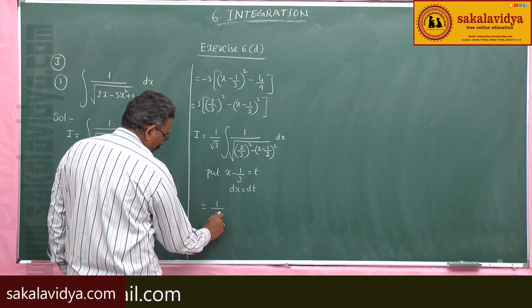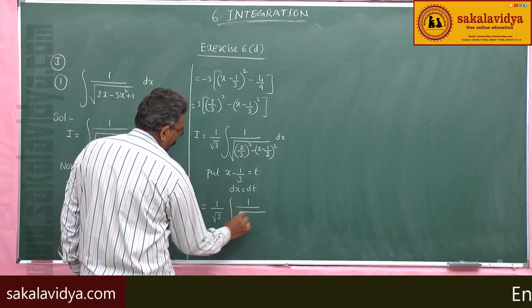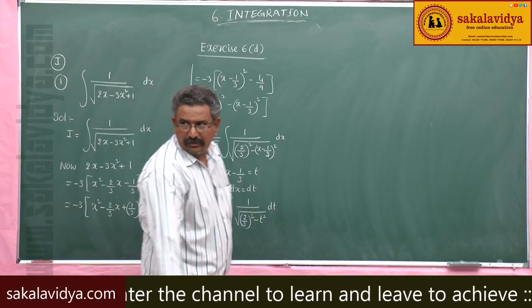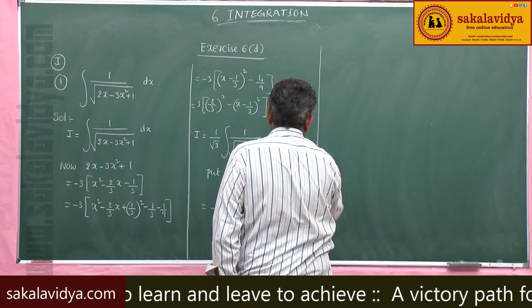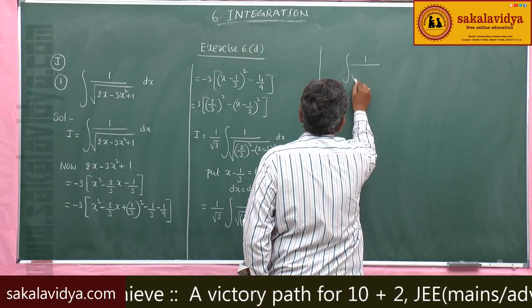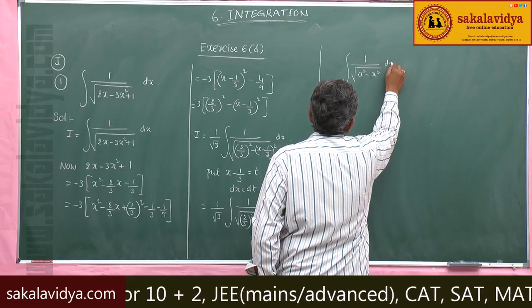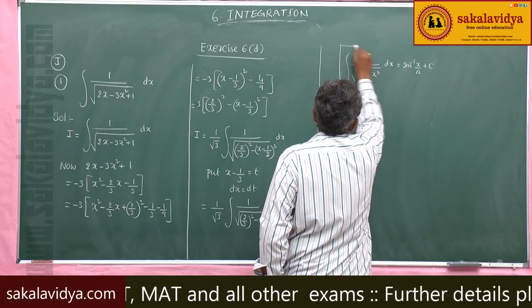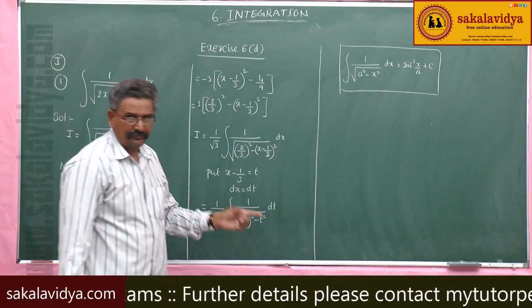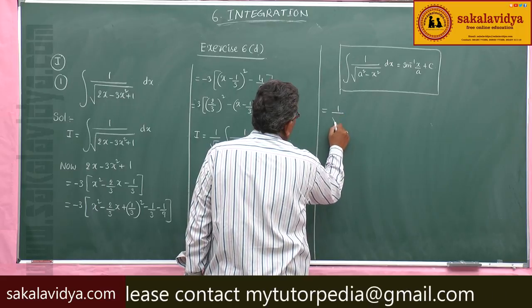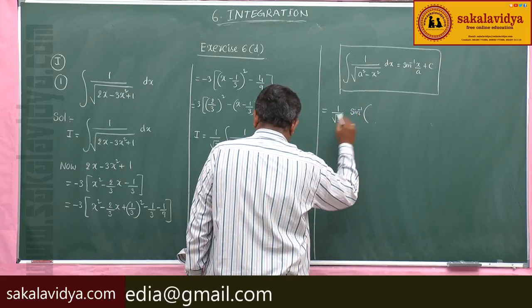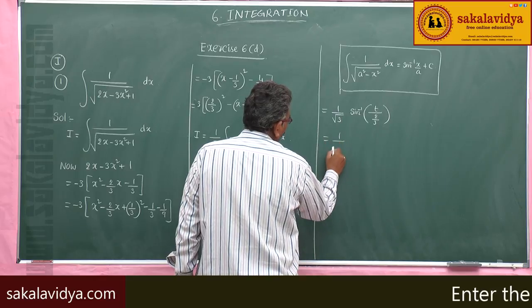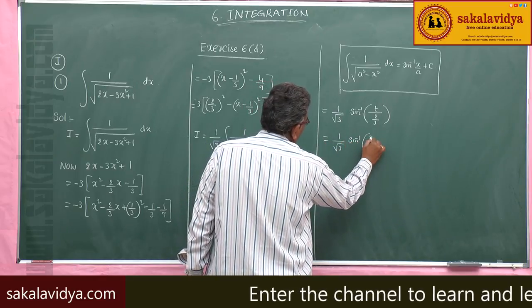So, this is 1/root 3 times integral of 1 by root of (2/3)² minus t² dt. Using the standard integral formula: integral of 1 by root of a² minus x² dx equals sin inverse of x/a plus c. This can be written as 1/root 3 times sin inverse of t divided by 2/3.